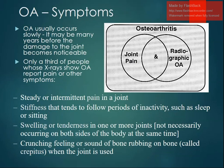Symptoms occur slowly — it may be many years before the joint damage becomes noticeable, making radiographic evidence very important, as by the time OA is diagnosed on X-ray the damage has often already been done. Symptoms include steady or intermittent pain, stiffness, swelling or tenderness, and a crunching feeling or crepitus — a clicking sound when the joint is used.